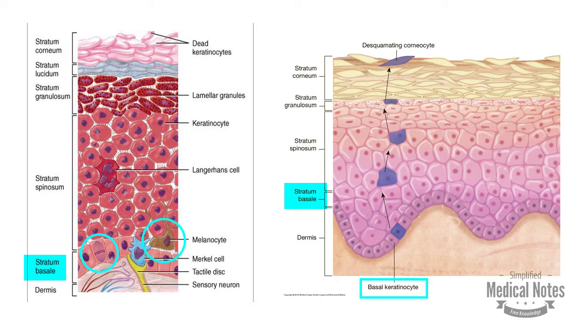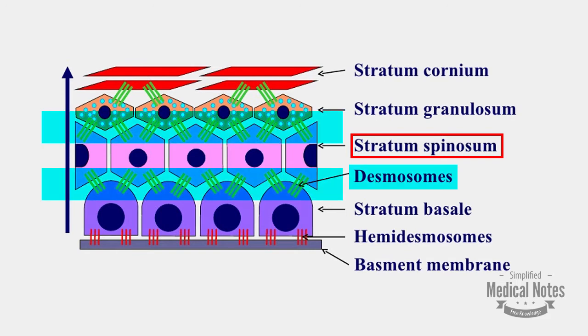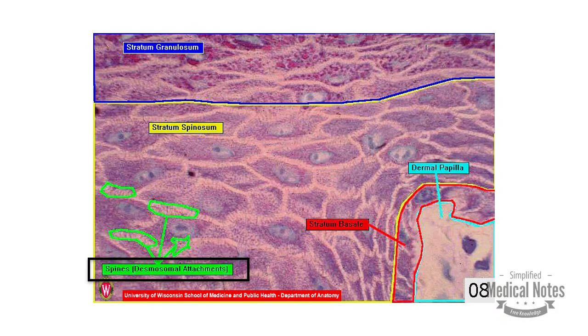The stratum spinosum contains desmosomes for intercellular adhesions, which gives its characteristic spiky appearance and hence the name spinosum.